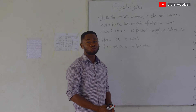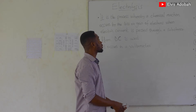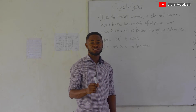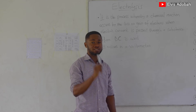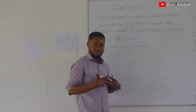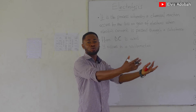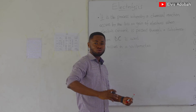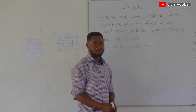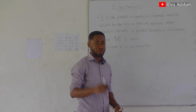Welcome students once again to Chemistry. In this video today we are talking about electrolysis. We've already considered the galvanic or voltaic cell, where a species or substance chooses to give electrons to another substance and electrons move, generating electricity. Today in electrolysis you are going to see something different.